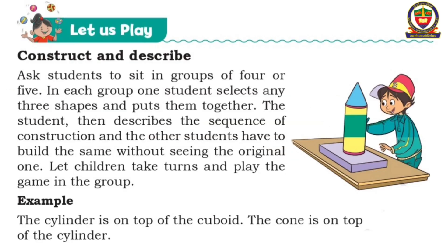Let's play! Ask students to sit in groups of four or five. In each group, one student selects any three shapes and puts them together, then describes the sequence of construction. The other students have to build the same without seeing the original. For example: the cylinder is on top of the cuboid, and the cone is on top of the cylinder. Now play this game with your friends.